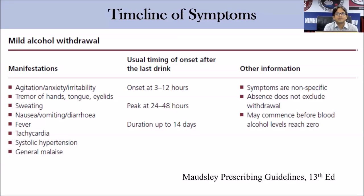This timeline from the MAUDSLEY Prescribing Guidelines is relatively more established for alcohol than for other substances like benzodiazepines or opiates, because alcohol withdrawal involves a single agent — ethanol. Between 3 to 12 hours after cessation, symptoms include agitation, anxiety, irritability, tremors of hands, tongue, or eyelids, profuse sweating, nausea, vomiting, increased body temperature, increased blood pressure, increased heart rate, and general malaise.